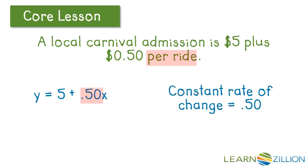We know the constant rate of change is .50. The verbal description gives us away with the word per. And the equation, it gives us away because it's the coefficient of x, our independent variable.